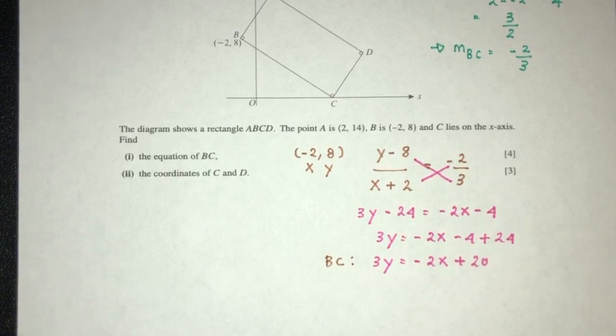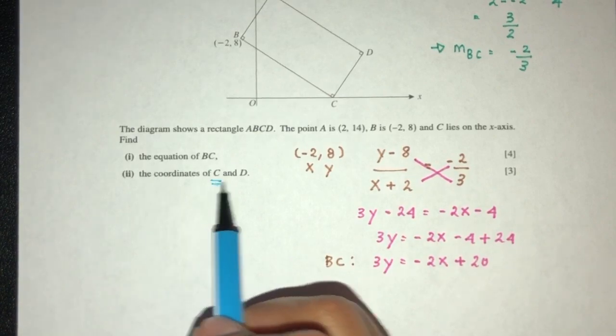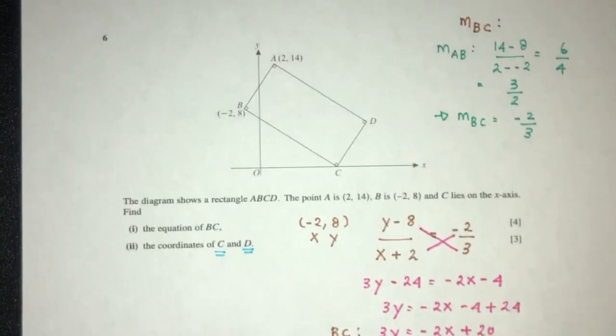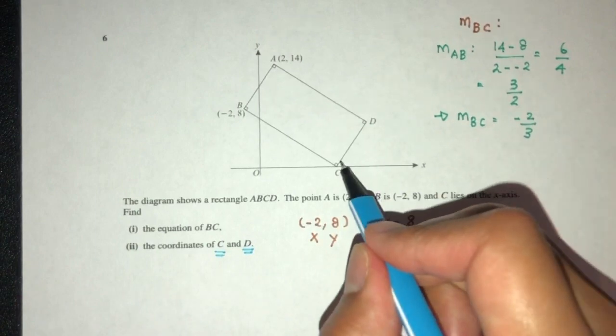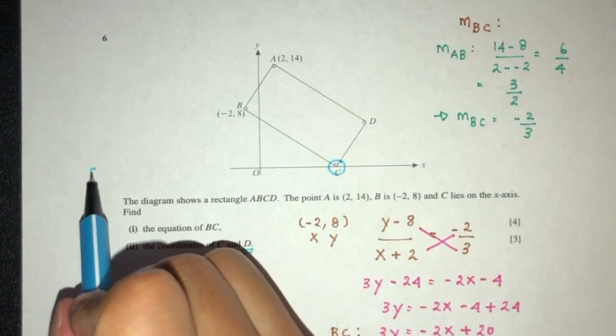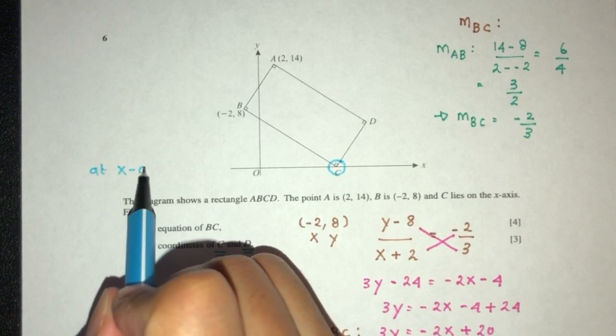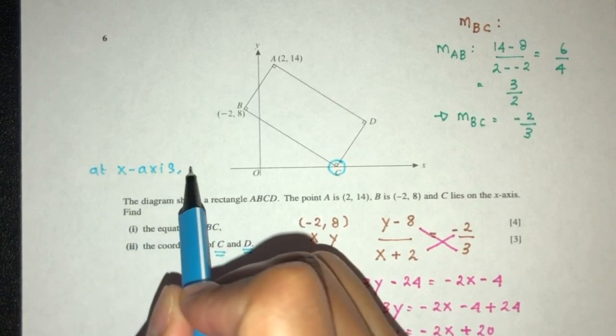Now for part 2, the coordinates of C and D, we have to find those two points. So first point, pretty easy, find the point of C. Now as always, at the x-axis, what do we know? The value of y must be 0.